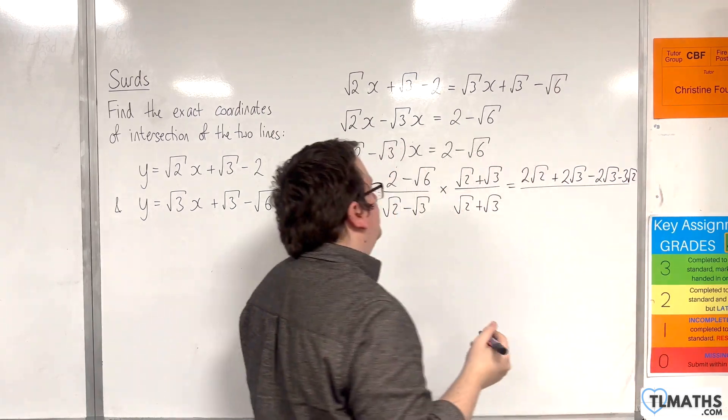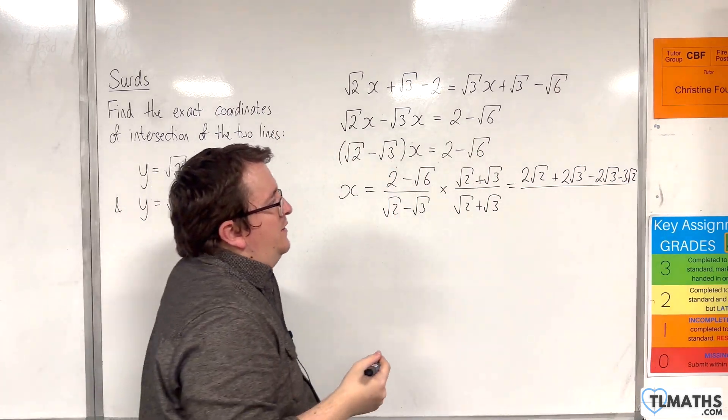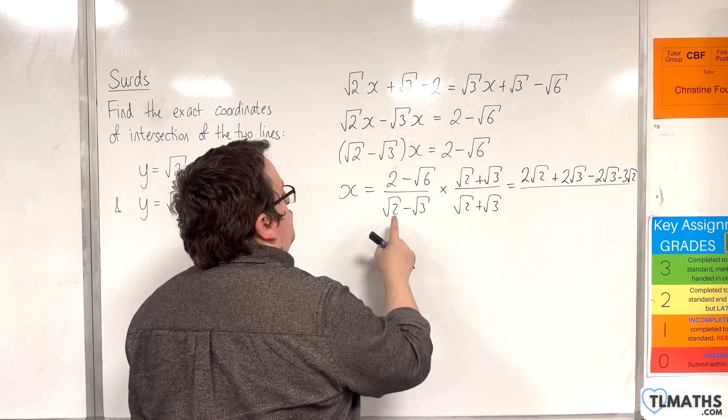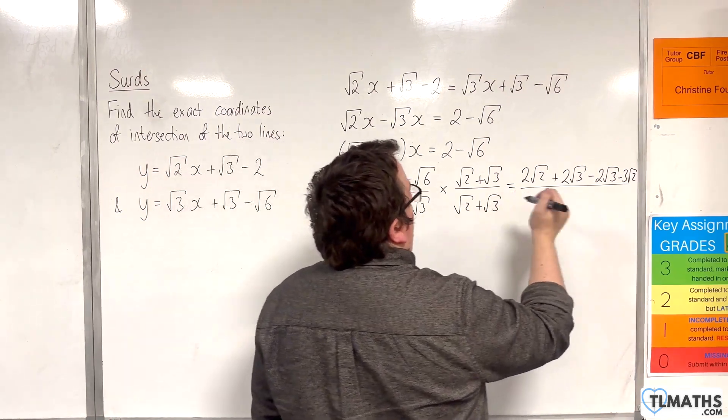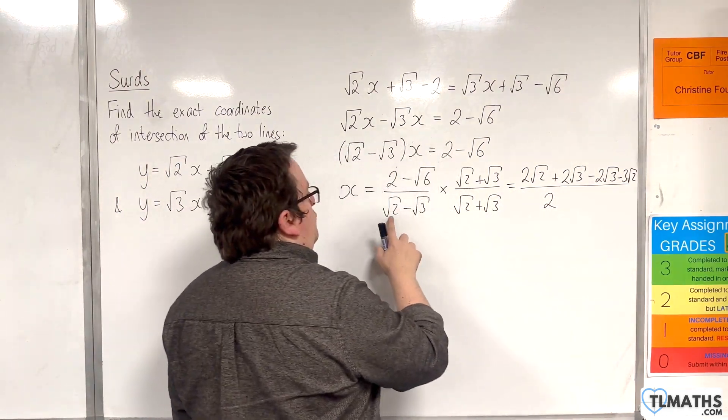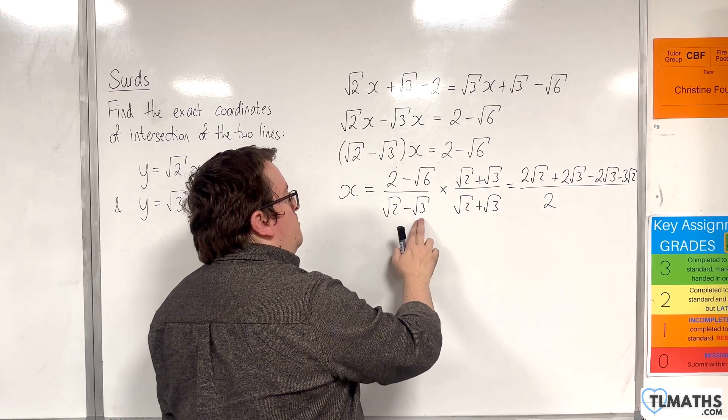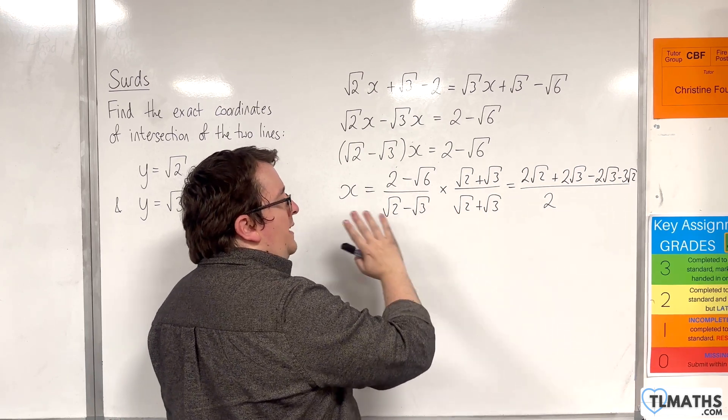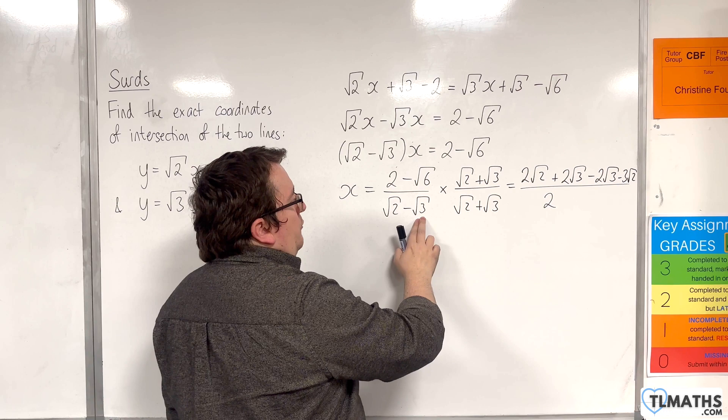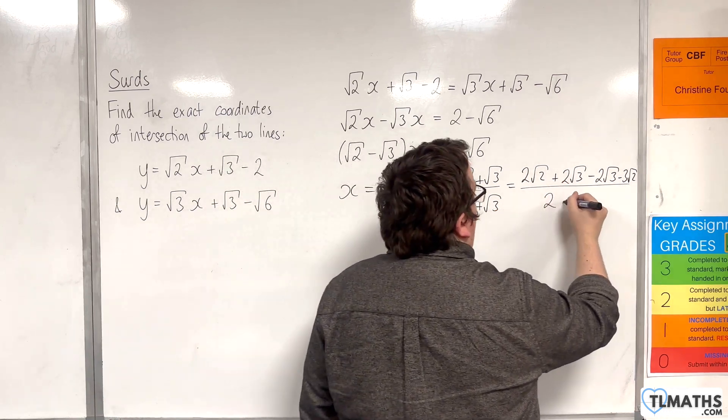Almost run out of space there. And in the denominator, we have root 2 times root 2, which is 2. And then root 2 times root 3, and minus root 3 times root 2, they cancel each other away. Minus root 3 times root 3 is minus 3.